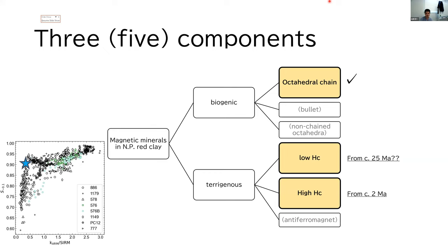So, so far we have seen the basic three components. The octahedral magnetite are everywhere. The higher coercivity terrigenous component has become important from around 2 Ma. And lower coercivity component is present at least from 12 Ma.